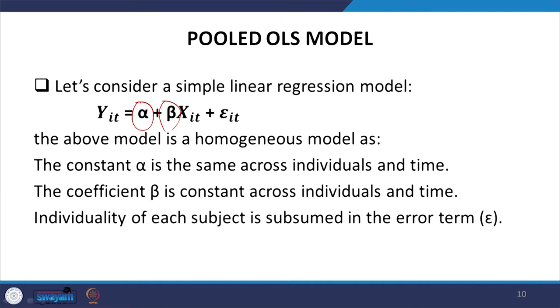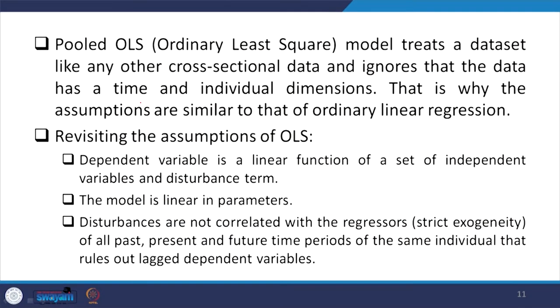Pooled OLS treats a database like any other cross-sectional data, ignoring that the data has time and individual dimensions. It simply considers cross-section units, but there are some problems. That is why assumptions are similar to those of the ordinary least square model. Revisiting the assumptions of OLS especially in the case of pooled data, there are some challenges: the dependent variable is a linear function of a set of independent variables and disturbance term, and the model is linear in parameters.